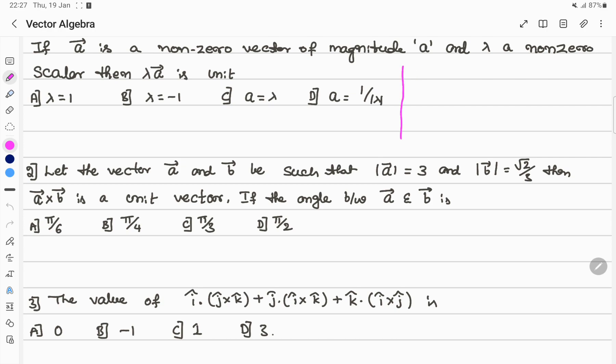You can see the answer here. First, what do we have? We have lambda a vector which equals unit, meaning if I apply magnitude here, it will be equal to 1. Why? Because it's a unit vector, so magnitude is 1.